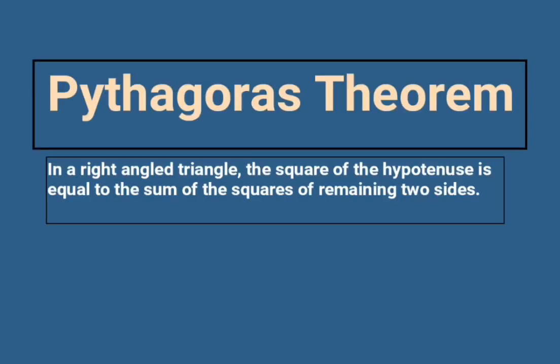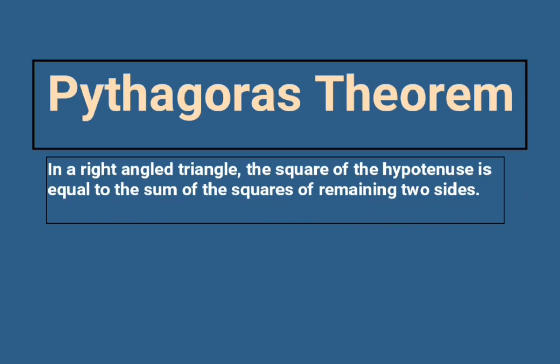The statement of this theorem is: in a right angle triangle, the square of the hypotenuse is equal to the sum of the squares of the remaining two sides. Now the very first step to prove any theorem is to draw a proper diagram.